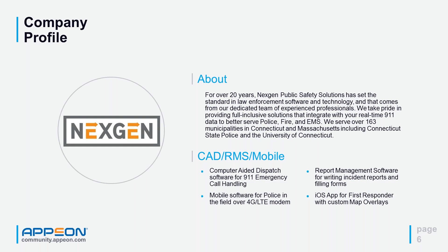NextGen Public Safety Solutions is a CAD/RMS vendor in Connecticut. Computer Aided Dispatching is what a dispatcher does when you dial 9-1-1 — they geocode your location, take in data from the 9-1-1 system, and dispatch emergency personnel. We interface with 9-1-1 systems, alert fire, police, and EMS personnel, work over 4G LTE modems in apparatus, have a native iOS app for first responders, and provide report management solutions.